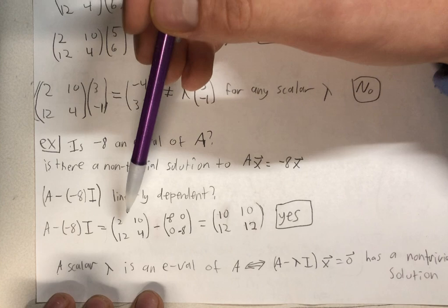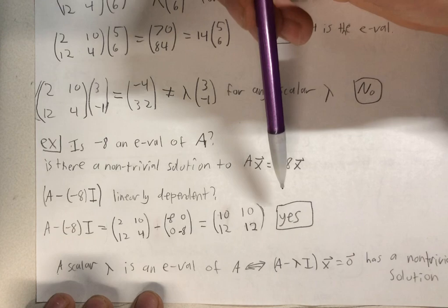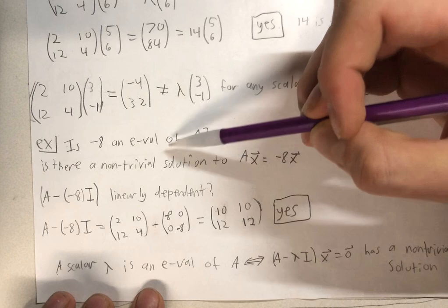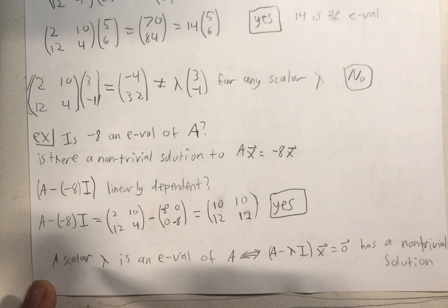So we just do A minus negative 8I. That's going to be 10, 10, 12, 12, which is pretty obviously linearly dependent. So the answer would be yes, negative 8 is an eigenvalue of A.